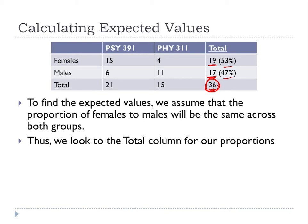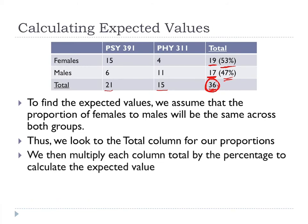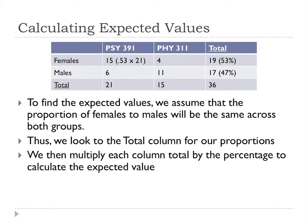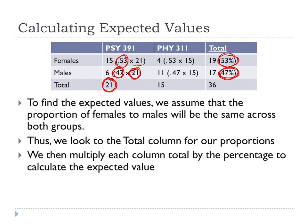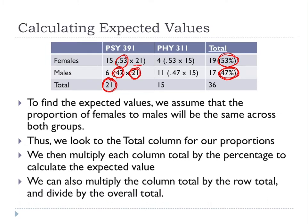What we do is multiply each column total by each one of the percentages to find the expected value. For instance, for the expected value here, we look down to the column total and over to the percentage. So we do 0.53 times 21 — we expect that just like 53% of all our subjects are female, we expect 53% of our 391 to be female. We do the same thing for males.